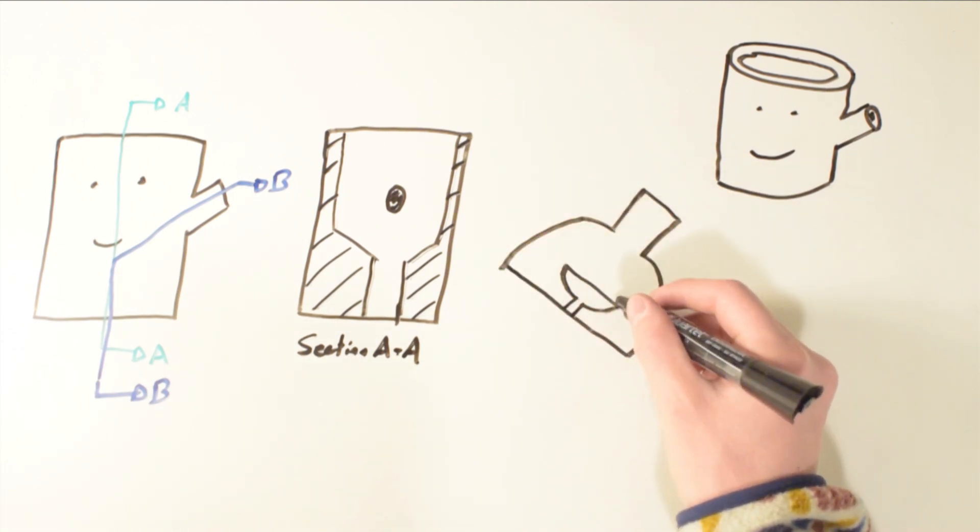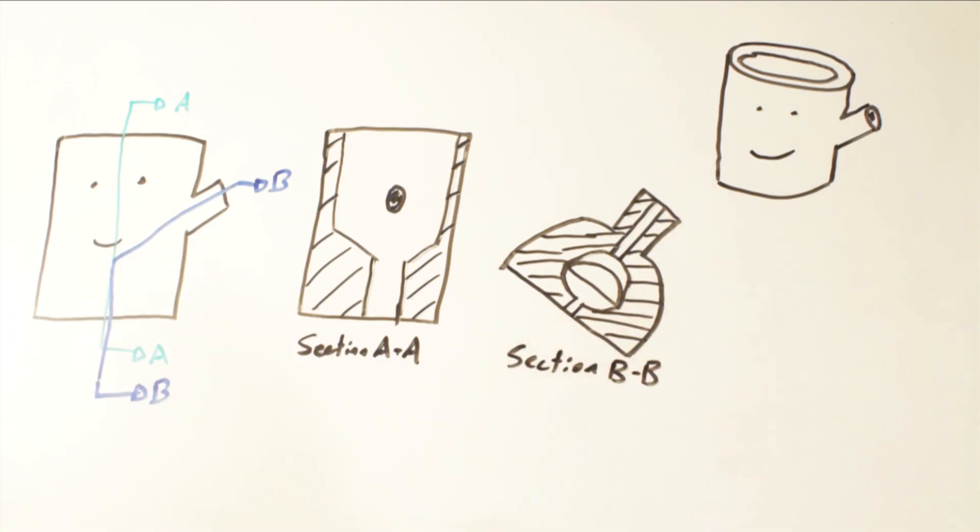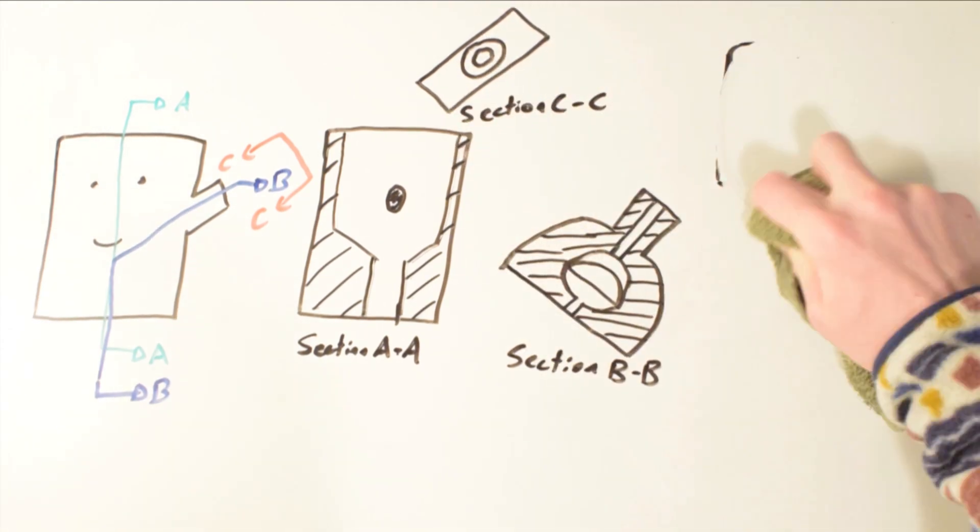If multiple features along different planes are needed to be shown, you may see offset or angled views. You may also see section views that are off the drawing at an angle. This is typically to give a head-on view of a feature that is at a strange angle relative to the local coordinate system.